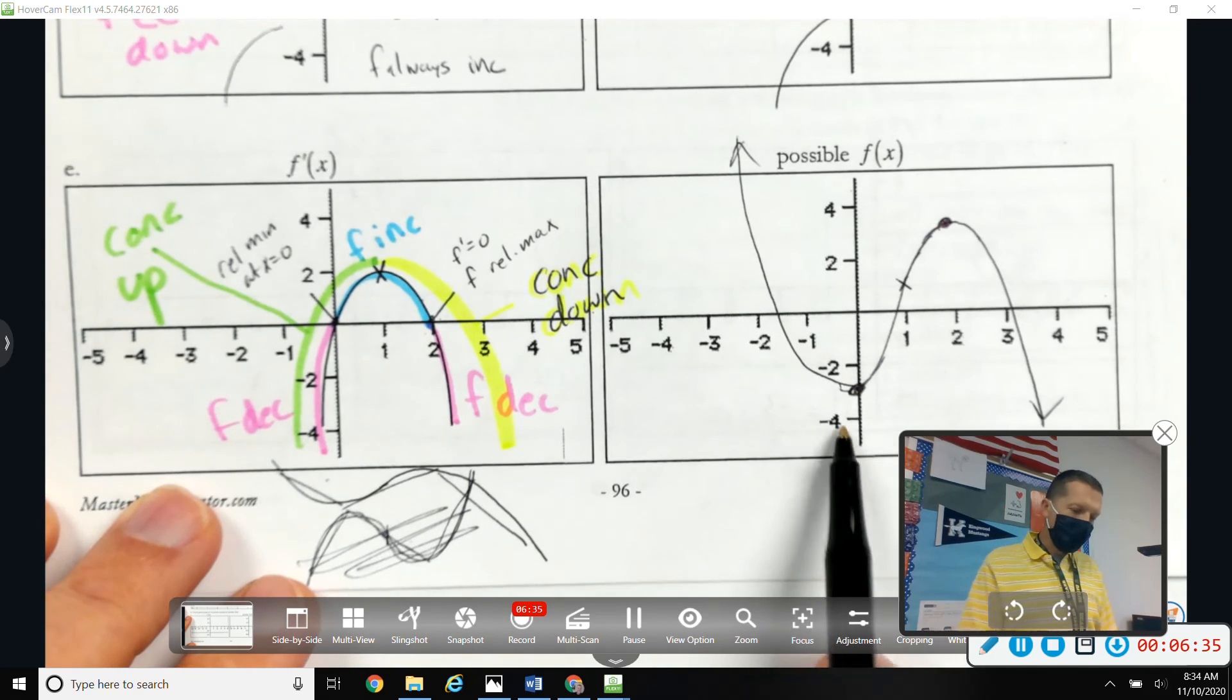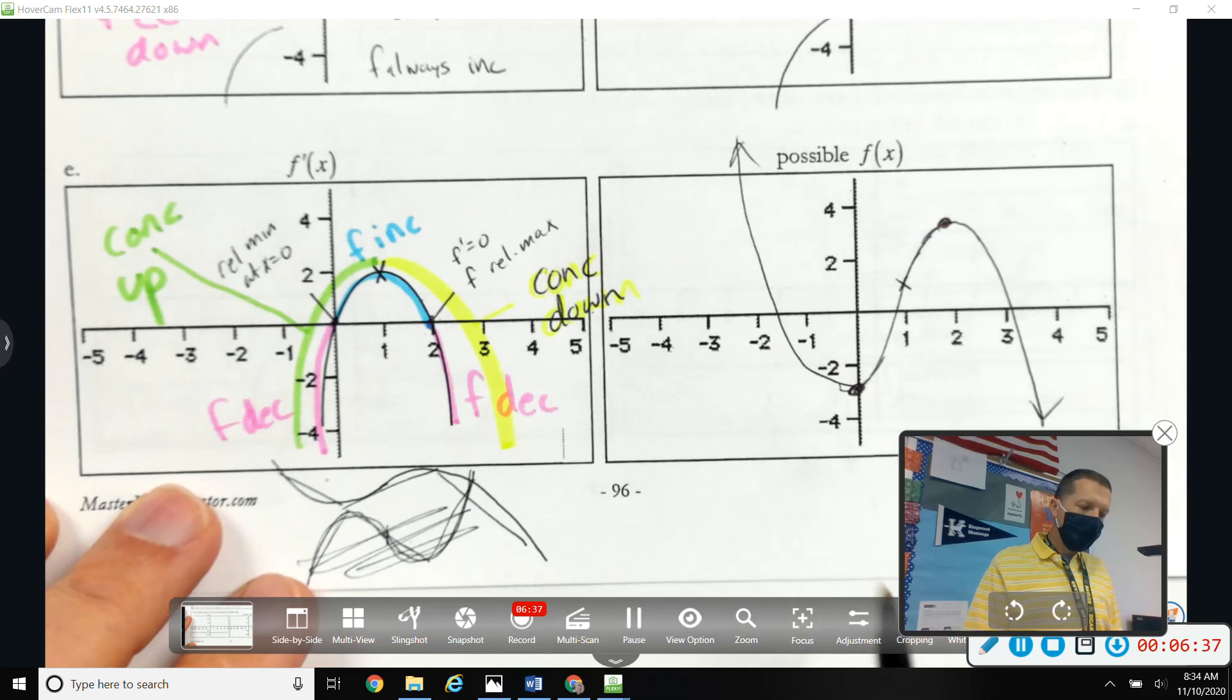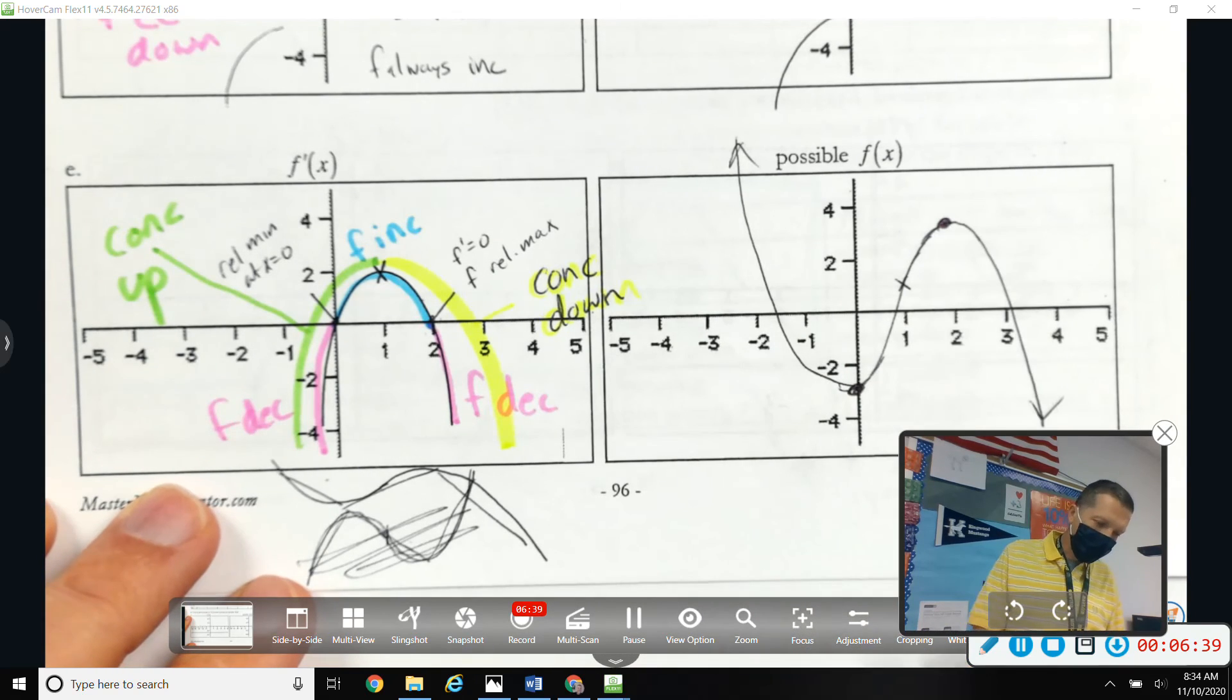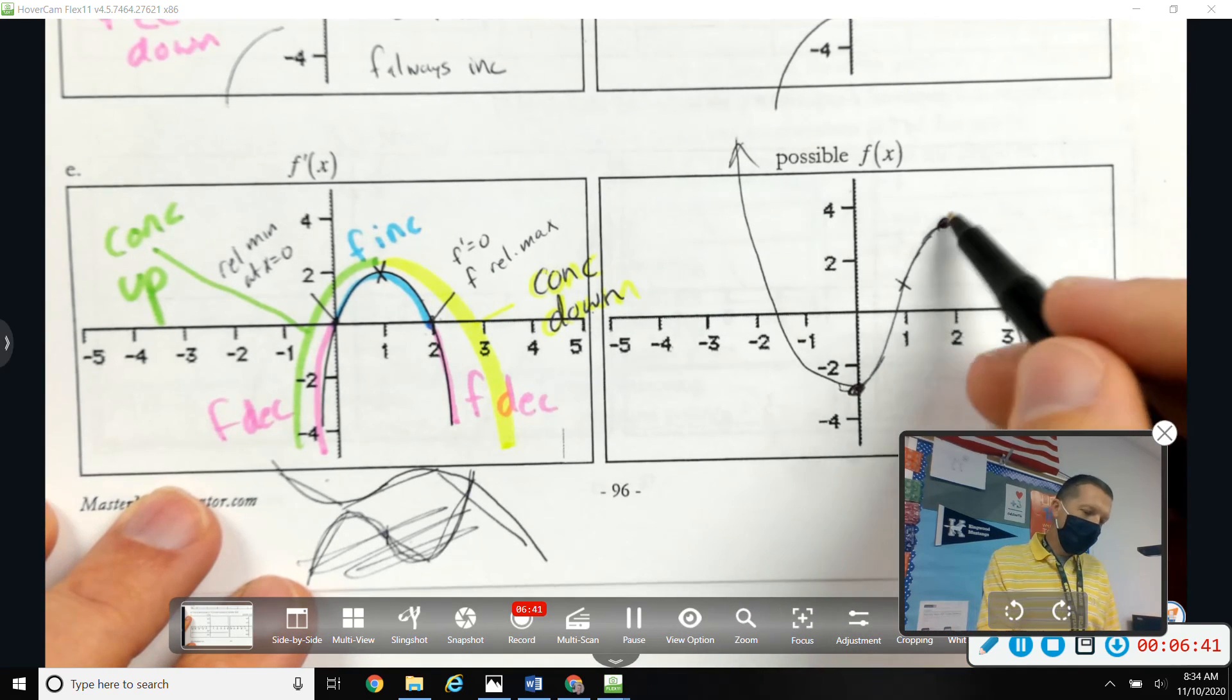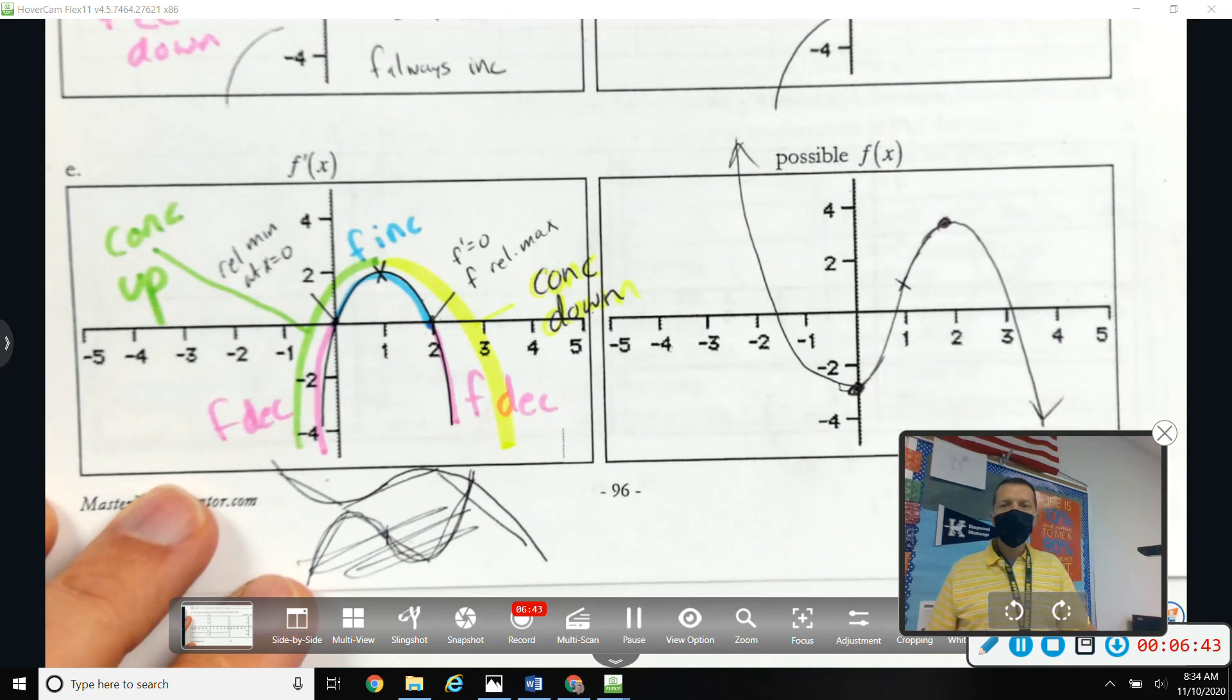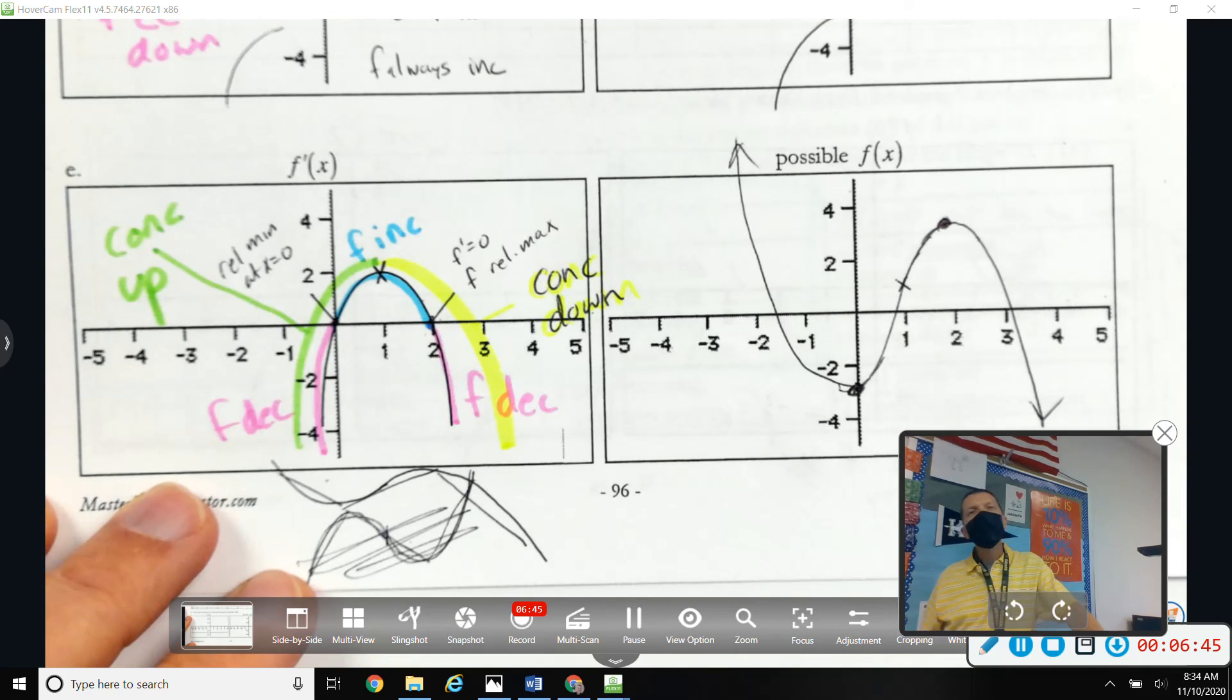Again, we didn't know exactly where any of these points were. So, as long as your picture looks like that, and you've got a max at two and a min at zero, and your concavity looks right, you'd be okay for those. We don't quite know enough to get the graph exact on those.